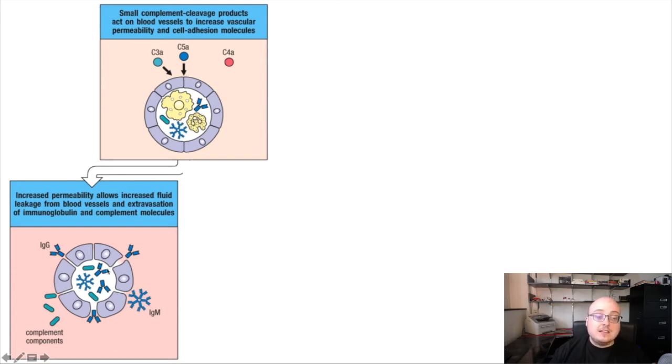So now we have these open spaces or fenestrations between the endothelial cells of the blood vessel. And when this happens, that allows things to leak into the tissue, things like molecules of the complement cascade, as well as any antibodies that are circulating in the blood. So this really gives access to the tissue in ways that we don't normally see under homeostasis, so that complement and antibodies can find the things that they're targeted against and actually exert their functions on them and control the infection.